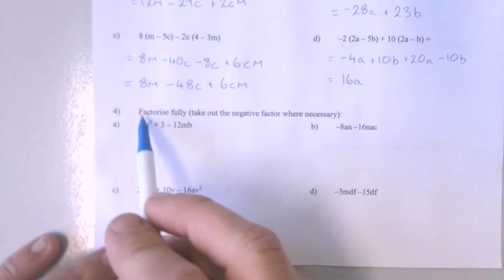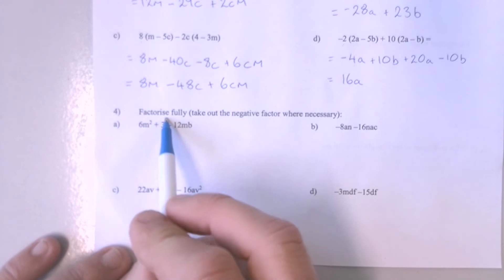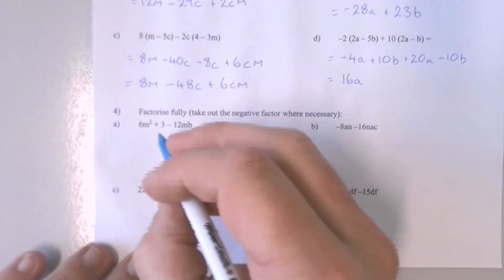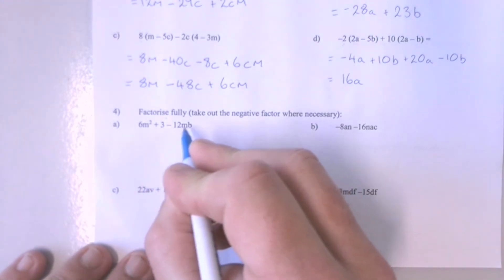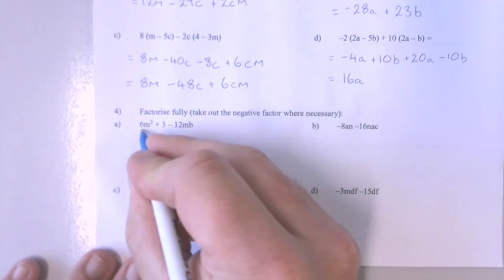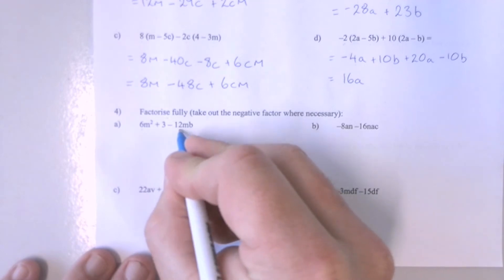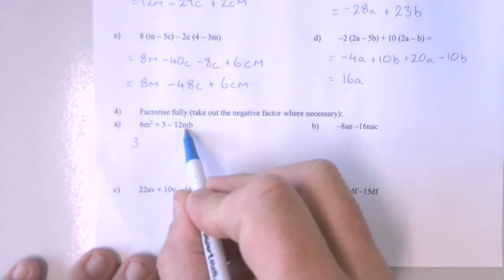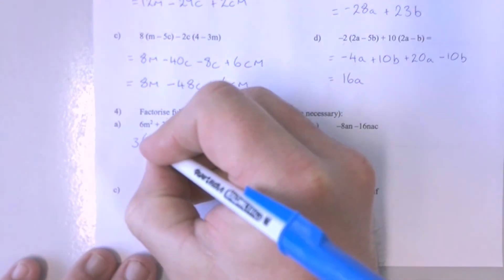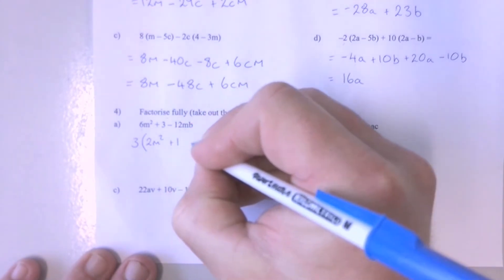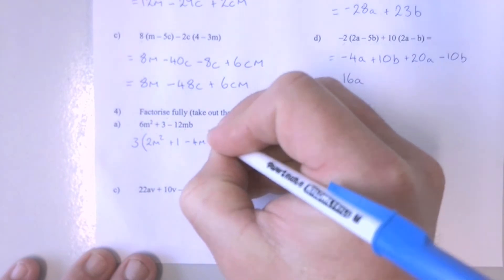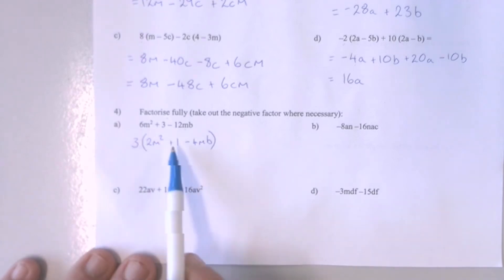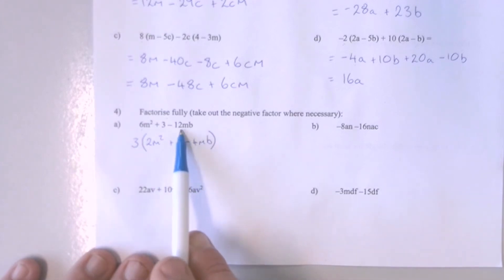Question 4A is asking us to factorise — we're going the opposite way to expanding. So what we want to do is take all of the factors that are common out the front of the brackets. I can see that 3 will go into each of those, so I'll take the 3 out the front. Now there are Ms across some of these, but not across all. So we're going to have 2M squared plus 1 minus 4MB inside the brackets. If I expand this back out: 3 times 2M squared makes 6M squared, 3 times 1 makes 3, and 3 times negative 4MB makes negative 12MB.